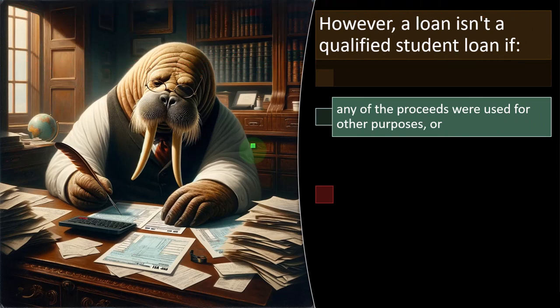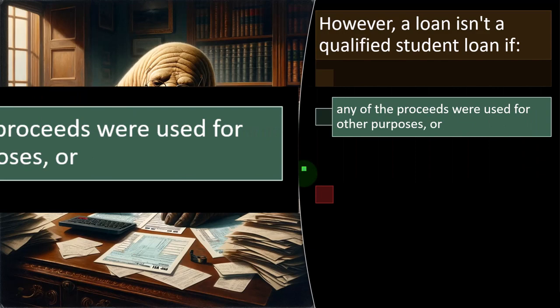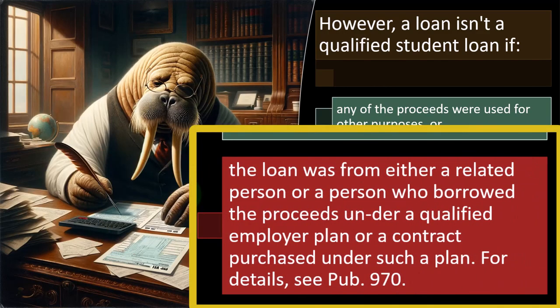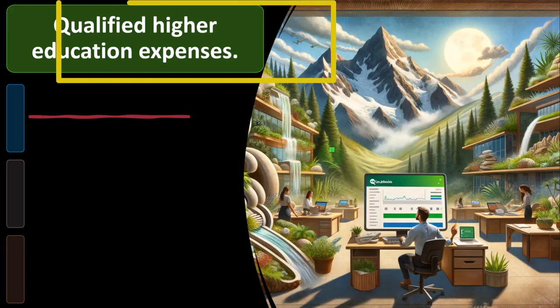However, a loan isn't a qualified student loan if any of the proceeds were used for other purposes. Clearly if you took out a student loan and bought a hundred-thousand-dollar car with it, that shouldn't qualify — we're not trying to subsidize you buying an expensive car. The loan also fails to qualify if it was from a related person or a person who borrowed the proceeds under a qualified employer plan or a contract purchased under such a plan — for details, see publication 970.